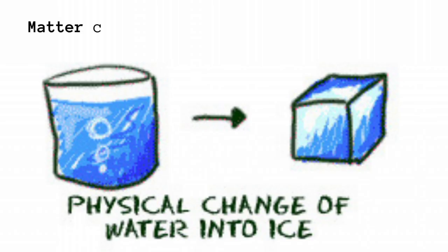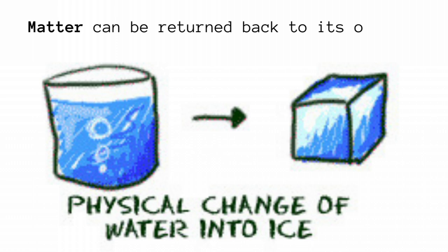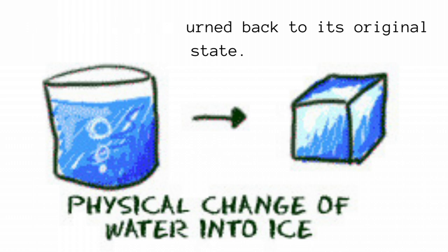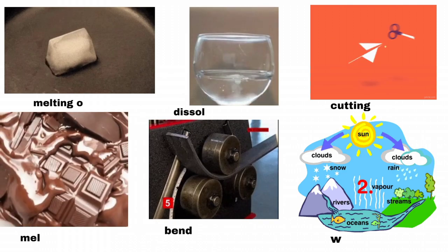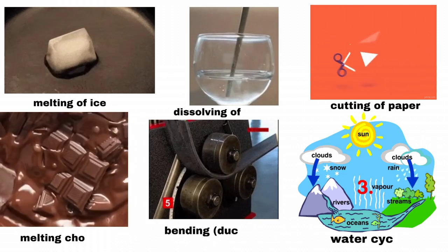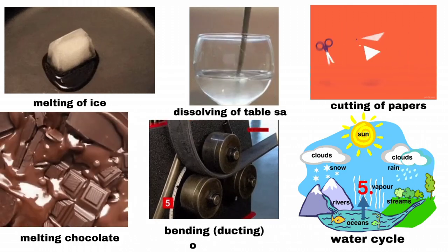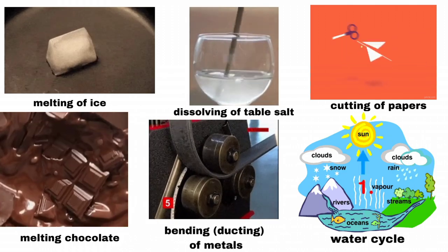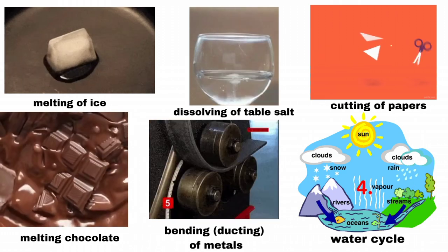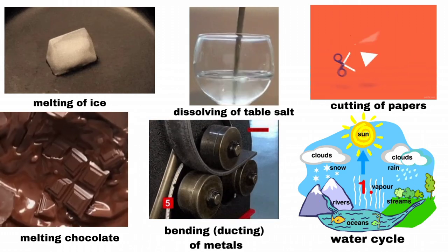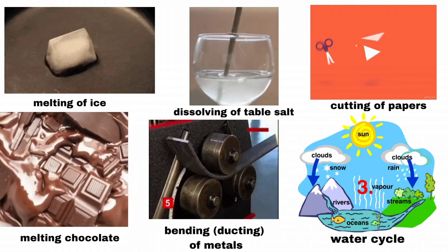This means that one way or another, matter can be returned back to its original state. Given examples include: melting of ice, dissolving of table salt, cutting of paper, melting chocolate, bending and ductility of metals, and the water cycle.